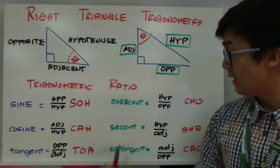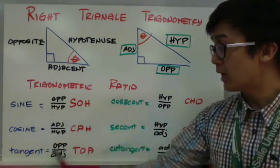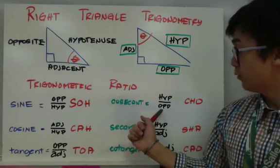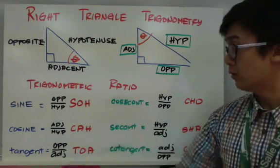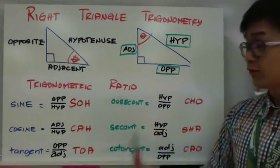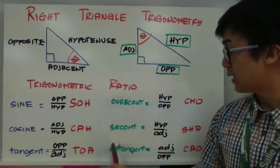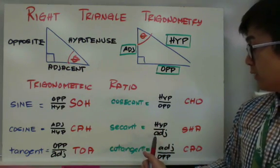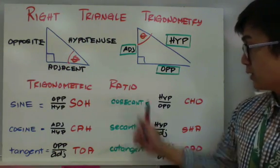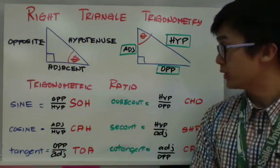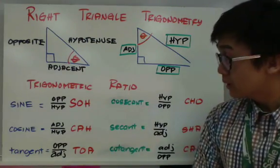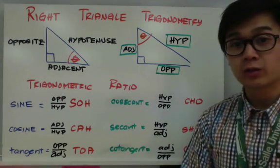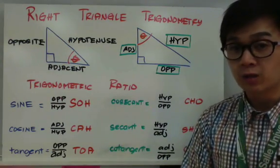So, kung ang inverse nila — dito sa given trig ratio na ito, kunin nyo lang yung reciprocal nung bawat ratio. At yun na yung inverse ng sine, cosine, and tangent. So, meron kang hypotenuse over opposite, hypotenuse over adjacent, and adjacent over hypotenuse para sa inverse nila. Itong formula na ito ay kailangan nyong tandaan kung magso-solve kayo ng mga problems involving trigonometry.